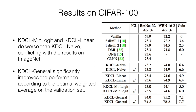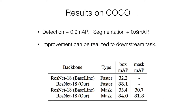An interesting phenomenon is observed: KDCL-MinLogit and KDCL-Linear do worse than KDCL-Naive, conflicting with the results on ImageNet. We conjecture that the soft target with less cross-entropy loss on the CIFAR-100 training set leads to overfitting, similar to the one-hot label. KDCL-General significantly improves performance by using a more general teacher model according to the optimal weighted average on the validation set.